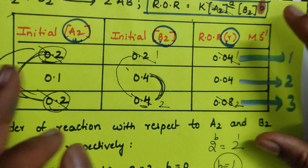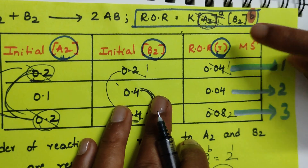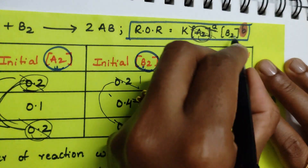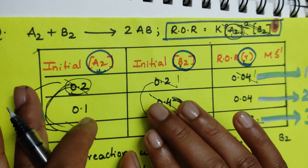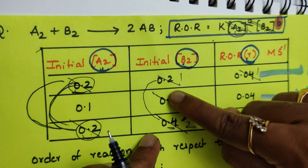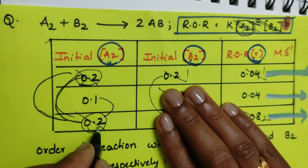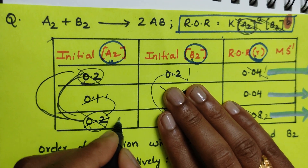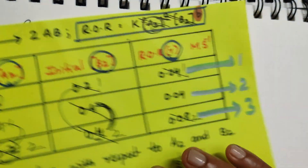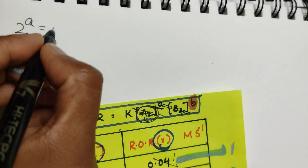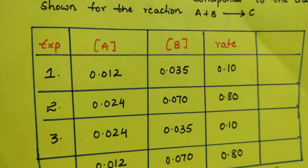Now for A order: take experiments where B is constant — B = 0.4 in experiments 2 and 3. Ratio of A concentrations: 0.2 / 0.1 = 2. Ratio of rates for those experiments: 0.08 / 0.04 = 2. So 2 = 2^a, meaning a = 1. That's it. Without writing the full method you get the same answer much faster.